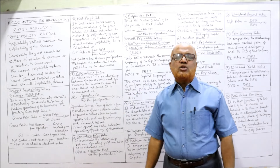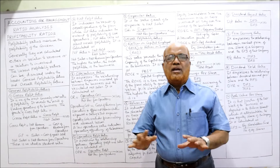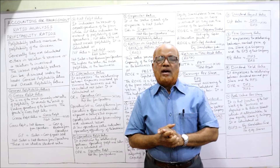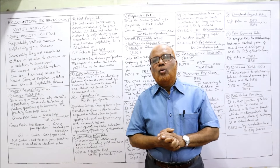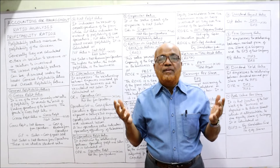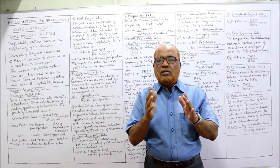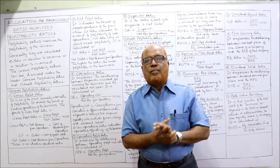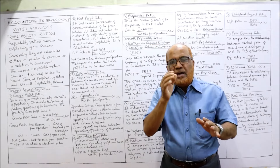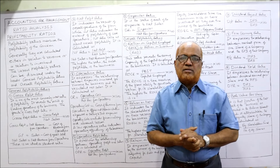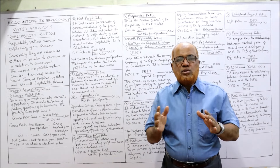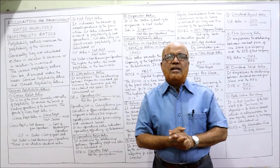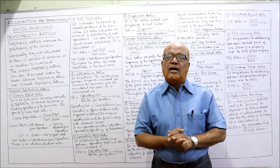In total, 5 general profitability ratios and 10 overall profitability ratios have been explained. Without remembering all these formulas and interpretations, you cannot solve problems. My suggestion is to be perfect with all theory videos first, and then go for problems. All problems are based on this theory. Totally 6-7 videos are being uploaded on ratio analysis theory, after which problem-solving videos will begin.